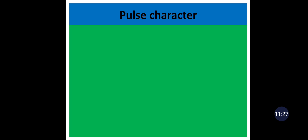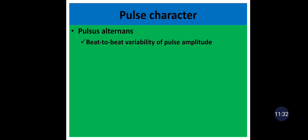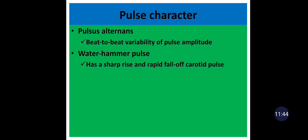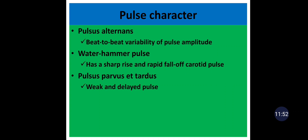There are different types of pulse characters. The first is pulsus alternans, or alternating pulse — the presence of beat-to-beat variability of pulse amplitude, found in heart failure. Water hammer pulse has a sharp rise and rapid collapse of the carotid pulse, found in patients with aortic regurgitation. Pulsus parvus et tardus is the presence of a weak and delayed pulse, found in patients with aortic stenosis.